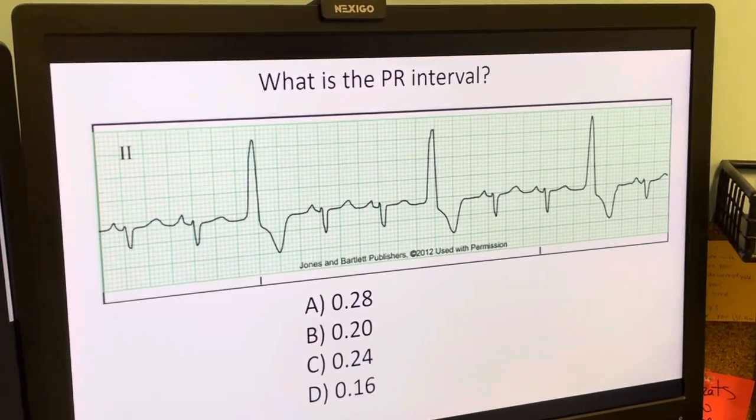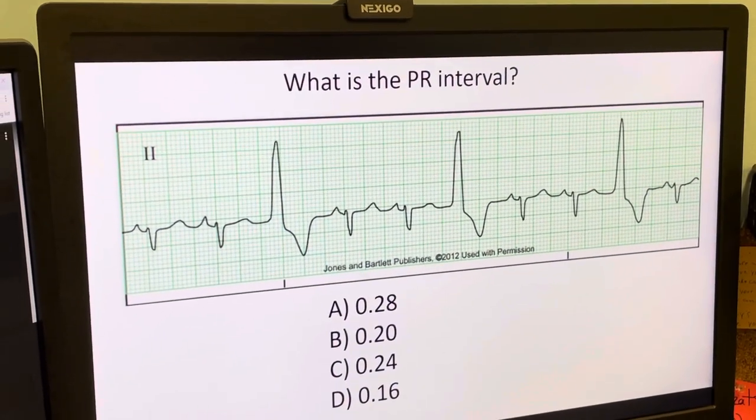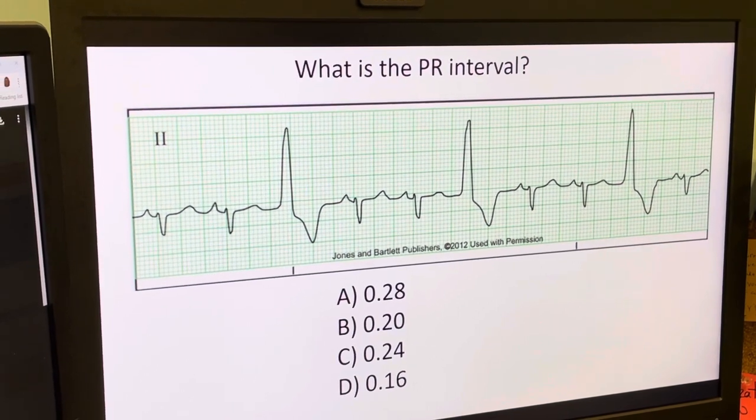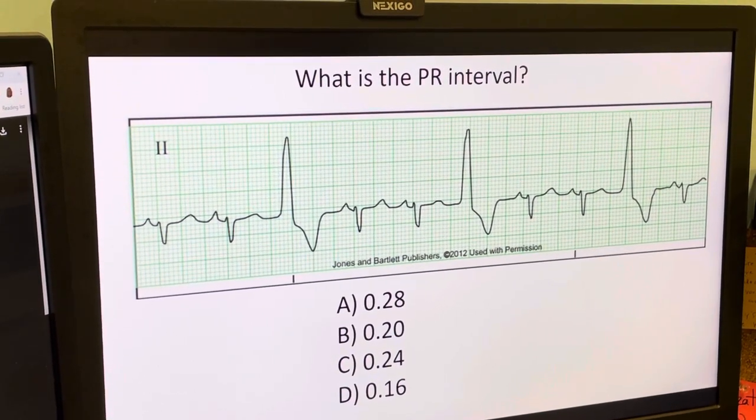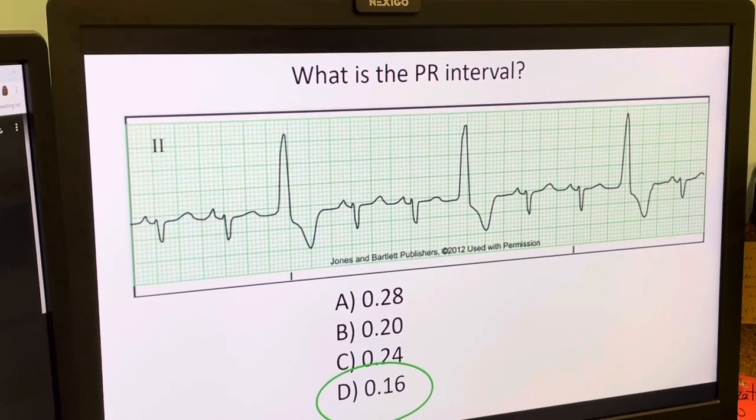I could also measure a couple other PR intervals and take the average, maybe the average is closer to 0.16. But in this case, closest answer to 0.12 is 0.16. I'm going to select that as the correct answer for my exam.